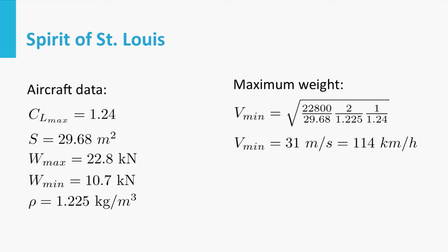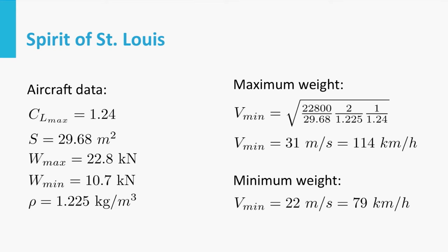It is clear from the equation that aircraft weight has a significant influence on the result since weight is inside the square root. At minimum weight the aircraft can fly noticeably slower — quite a difference. So a heavier aircraft must fly faster in order to generate enough lift. This means minimum airspeed actually changes during flight as the aircraft burns fuel and reduces its weight.